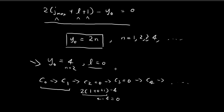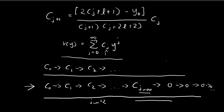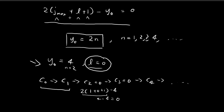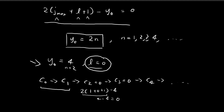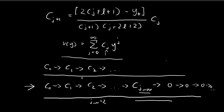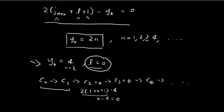This added restriction also imposes restrictions on the values l can take. If l is too big, the chain of coefficients will never stop — it will never evaluate to zero. We can actually choose what j_max is going to be: for a given choice of j_max and n, we get 2(j_max + l + 1) − y₀, where y₀ = 2n.